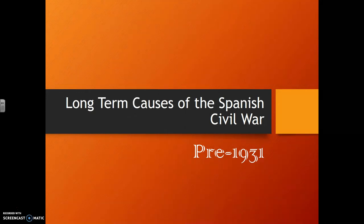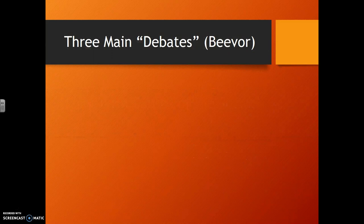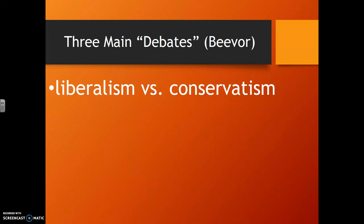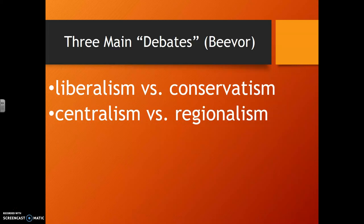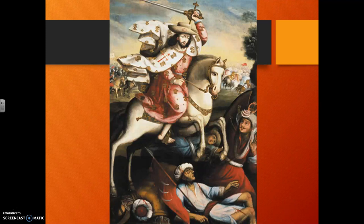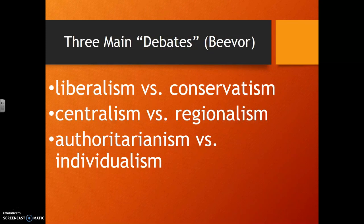We'll start with the long-term causes of the Spanish Civil War, going back to the origins of modern Spain. Historian Anthony Beevor has identified three interlinked debates that eventually led to civil war: liberalism versus conservatism, as in Enlightenment-style liberal thought versus more traditional thought; centralism versus regionalism, central government versus regional autonomy; and authoritarianism versus individualism. Overall, the nationalist rebels were more cohesive, representing a more conservative, centralist, authoritarian group.